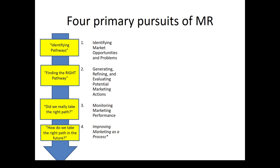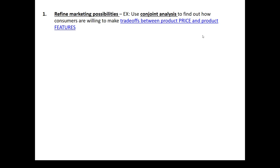Another common pursuit of marketing research is to generate, refine, and evaluate potential marketing actions. In this situation we already have a set of possibilities we're considering — maybe a set of different strategies or tactical options — and we use marketing research to figure out which choice is likely to be most productive. Just one example of this would be using a research technique called conjoint analysis to find out how consumers are willing to make trade-offs between price and product features.